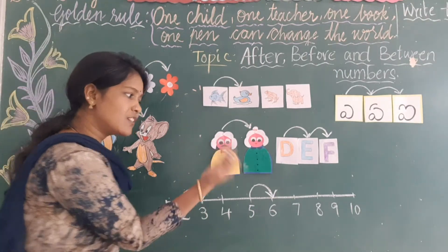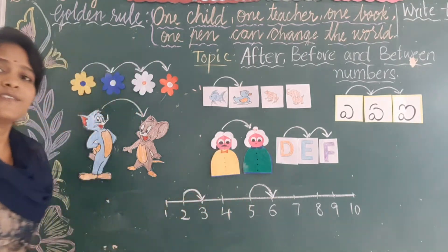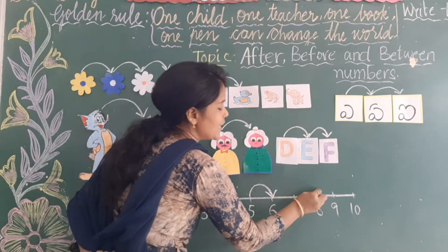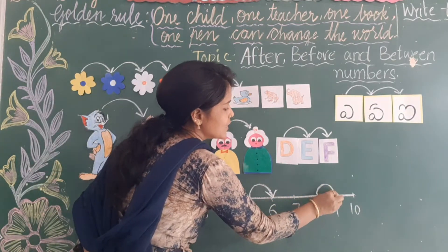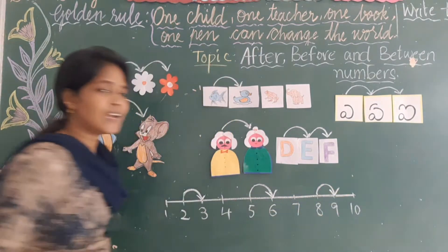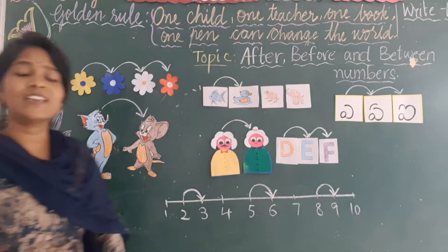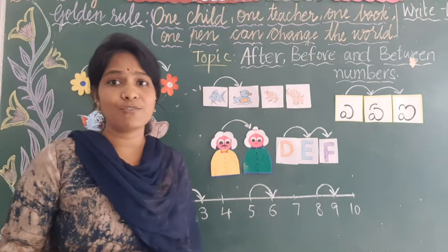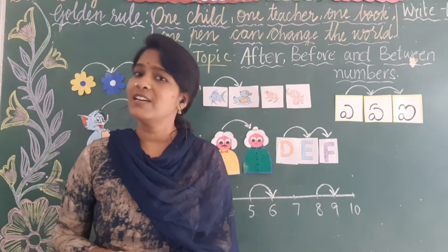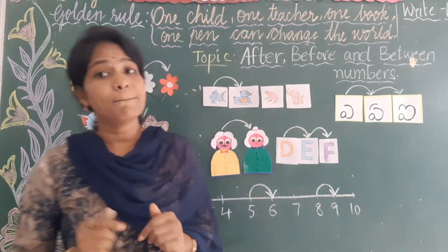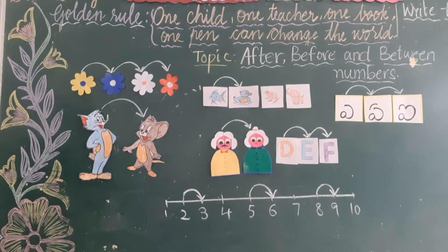After 8, which number do you get? After 8 you get number 9. Did you all understand how to find out the after number? Now let us do the before number — how do you find out the before number? I will explain.